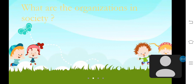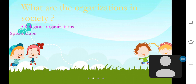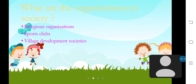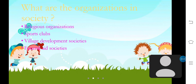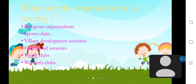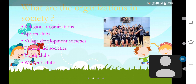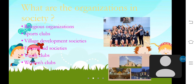What are the organisations in society? Let's see what they are. They are religious organisations, sports clubs, village development societies, funeral societies, youth clubs, and women's clubs. From this picture you can see some sports clubs and religious organisations.